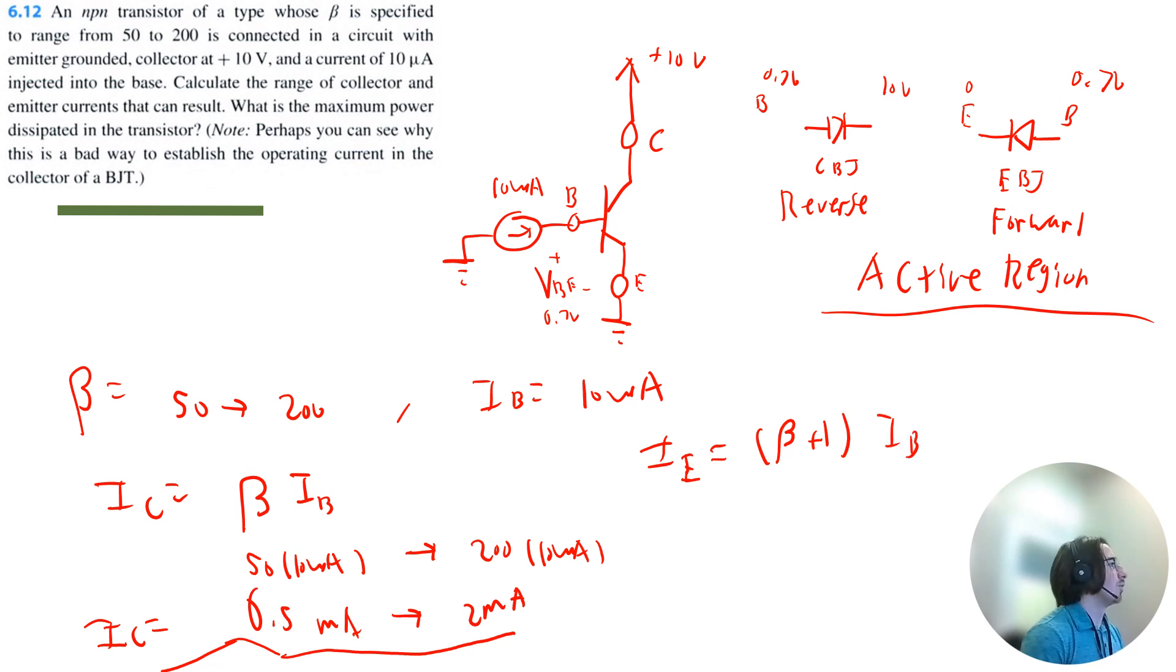So that'll equal 51 times 10 microamps to 201 times 10 microamps. So I get that the emitter current will range from 0.51 milliamps to 2.01 milliamps.